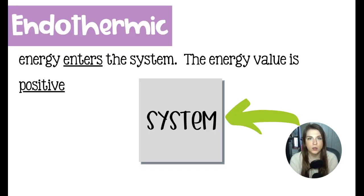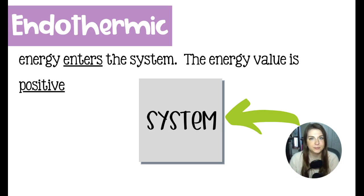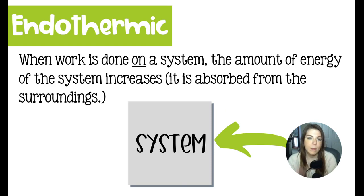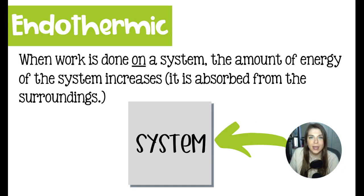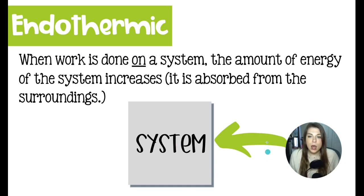The opposite is true in an endothermic reaction. I like to say that the energy enters the system — it helps me remember it. In this case, your energy value is going to be positive because it is absorbing energy from the surroundings. The work is done on the system, meaning the surroundings are putting the energy into the system. So we have an arrow representing the energy coming into the system from the surroundings. What's going to happen is that this is going to feel cold — because all of the heat that the beaker or flask had went into the system.